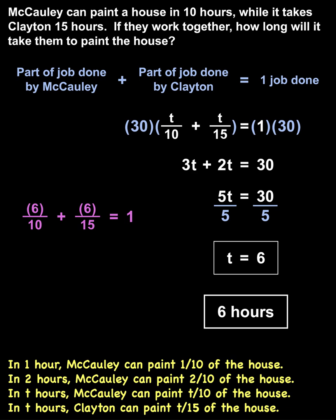And reducing on the left side, we have 3 fifths plus 2 fifths equals 1, which simplifies to 5 fifths equals 1, which is a true statement, so our answer checks.